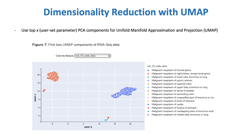Next, dimensionality is further reduced by using the top x PCA components — a user-set parameter — for Uniform Manifold Approximation and Projection, or UMAP, which is useful to accentuate any clustering present. Here is a similar scatterplot as before, now using the two UMAP components.